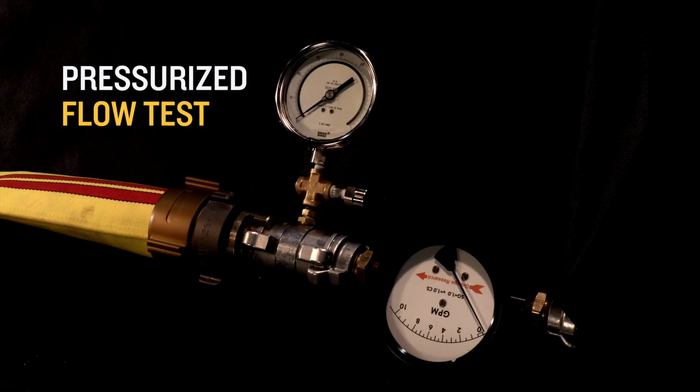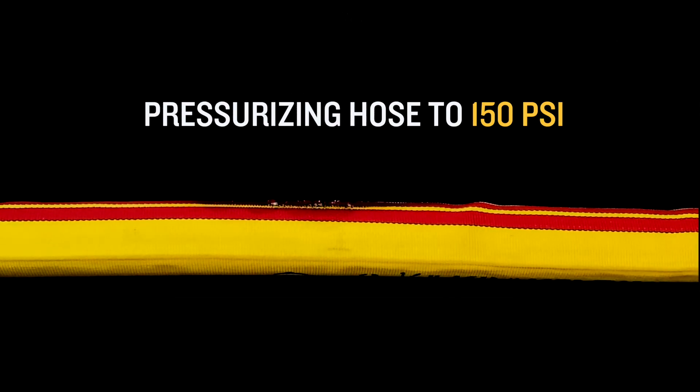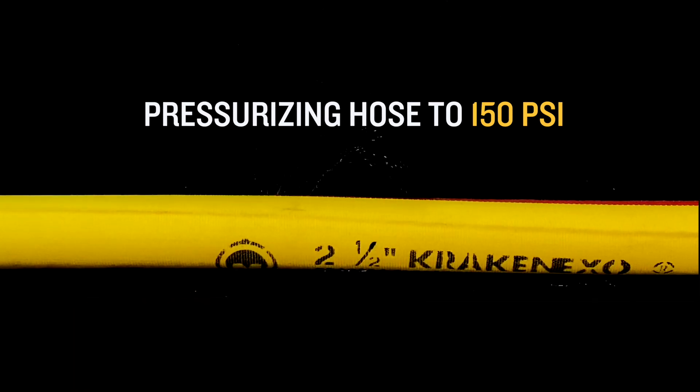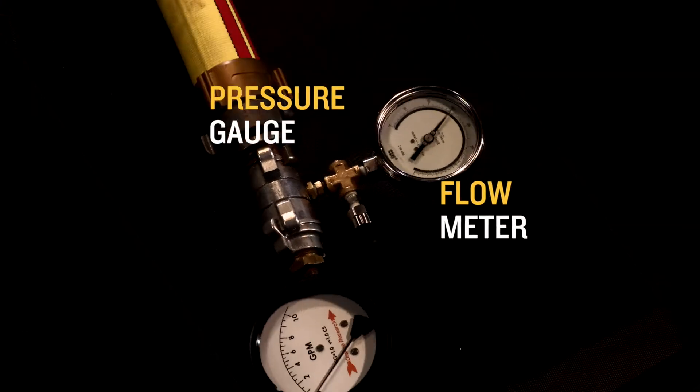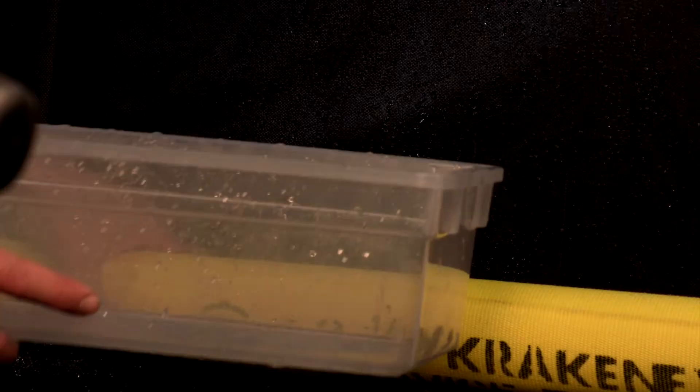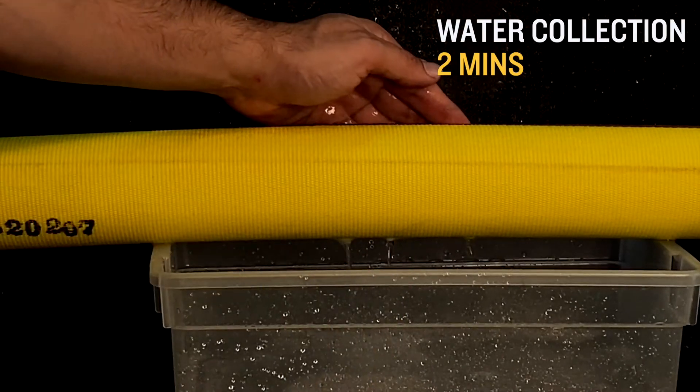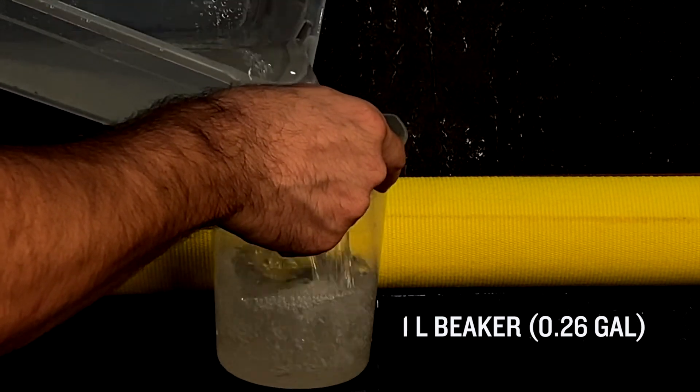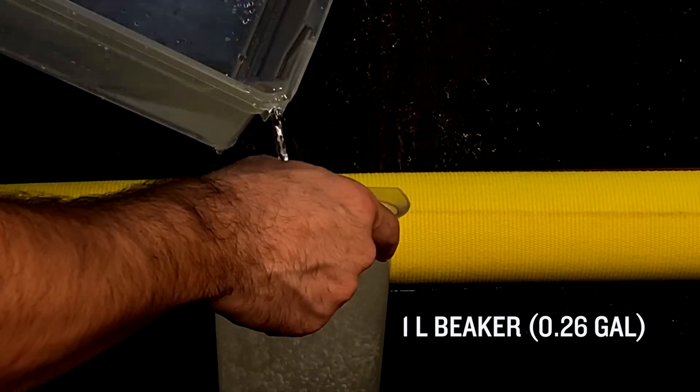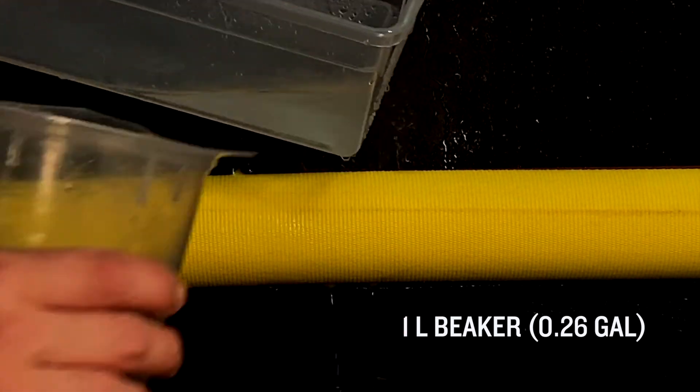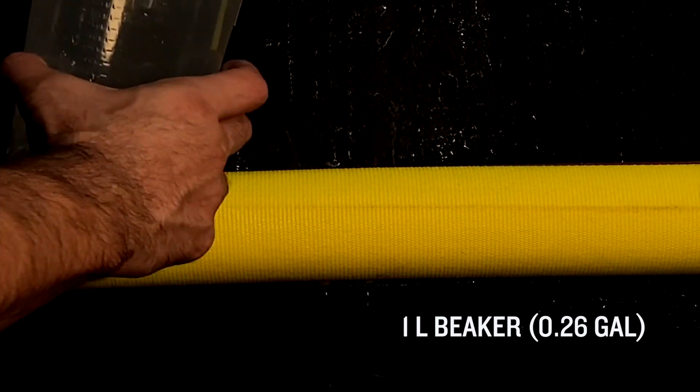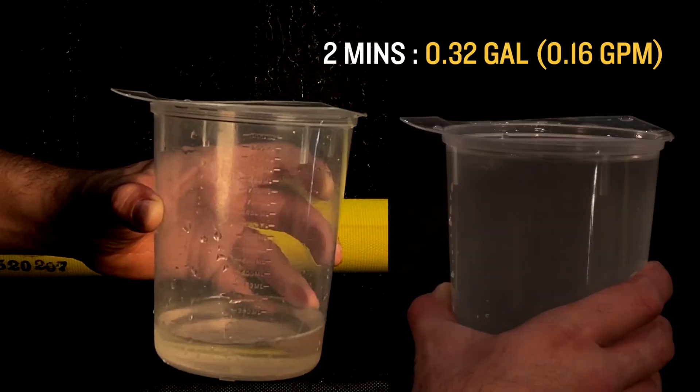After the radiant heat test, we perform the flow test. Here at the water testing station, we're going to take that hose, bring it back up to 150 PSI, and then measure the water leakage with a flow meter. Our hoses test with incredibly low gallons per minute water leakage.